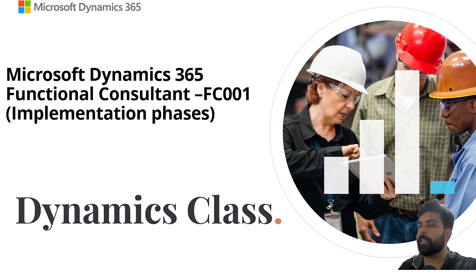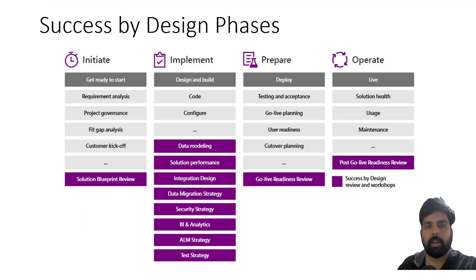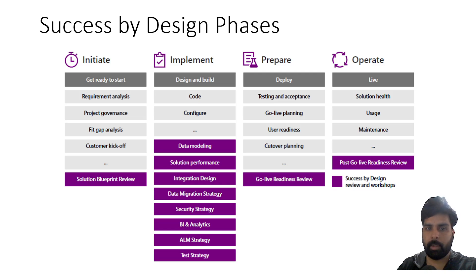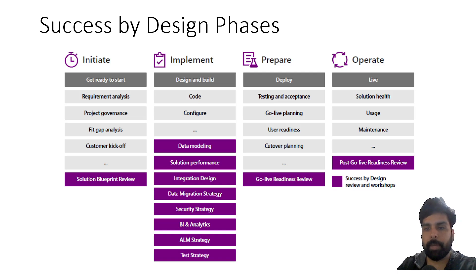When I get into a project as a Functional Consultant, it is very important to understand the different phases of the project. Later on, I am going to break down each and every phase and every activity in that specific phase and talk about how I perform those actions and activities during implementation. As per the Success by Design Implementation Guide, any implementation project has four different phases.